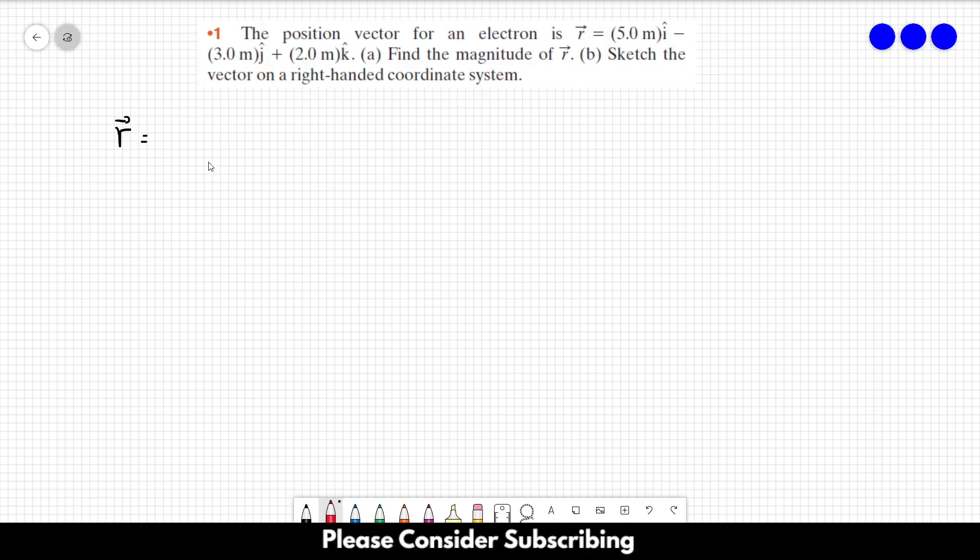Vector r is equal to 5 meters in the i direction minus 3 meters in the j direction plus 2 meters in the k direction. And this is in meters, of course.